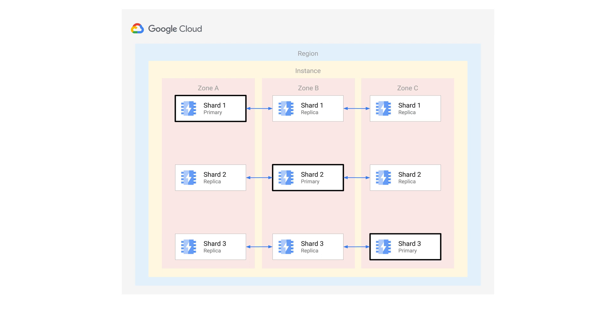When deploying a Memorystore for Redis Cluster, a user specifies a region and a shard count. Each shard provides additional key space and throughput. Your data is automatically sharded or allocated amongst the Redis shards that make up the cluster to protect against failures. Shards are automatically distributed across availability zones within the selected region. When replicas are enabled, each replica is placed in a separate availability zone from its primary shard to further increase resiliency. Failover between primaries and replicas is automatic and fast.